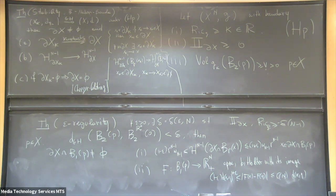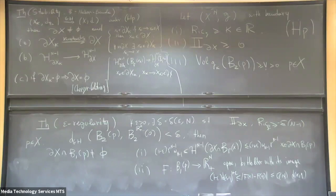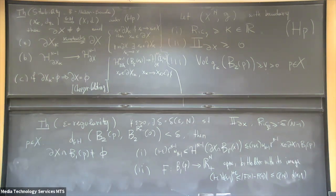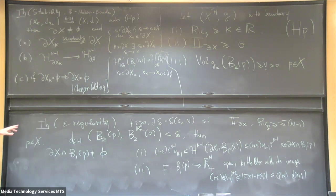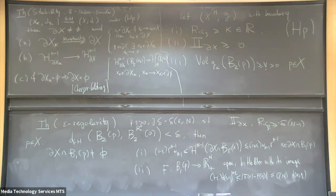In the epsilon regularity theorem, you need assumption 3 to enter in some way — but actually this property implies assumption 3. It is an instance of Cheeger-Colding: if you are close to the Euclidean half-space, the volume must be sufficiently large. One can prove the volume of the ball is close to the volume of the ball in the Euclidean half-space up to a factor depending on epsilon, so in particular it's bigger. This is a generalization of Cheeger-Colding to the RCD setting, and it also works with the half-space.